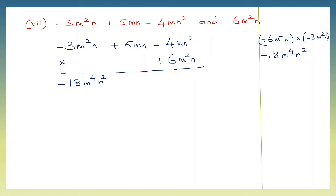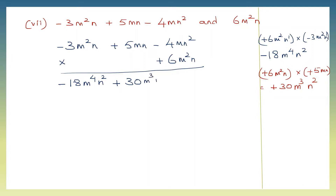Now let's multiply plus 6m squared n with plus 5mn. Signs are the same, so plus. 6 fives are 30. Now m squared and m: 2 plus 1 makes it m to the power of 3. n: I have 1n here and 1n there — makes it n to the power of 2. So let's write that down: plus 30m cubed n squared.